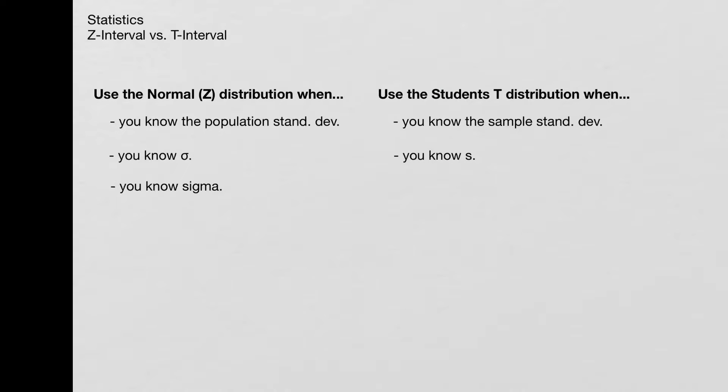And the last one is the trickiest. So if they tell you here is the standard deviation for all individuals in the population, then that's the normal distribution, because all in the population is population standard deviation.